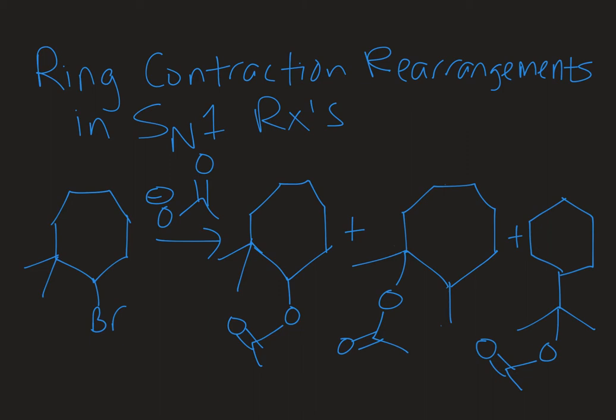We're starting out with a seven-membered ring with our leaving group on it. Here's our bromine, and you can see that we have two products that still contain seven-membered rings. However, if we look at where our leaving group started right here, we can see that this product would be an expected product.